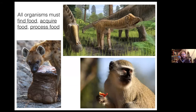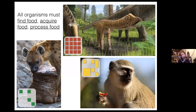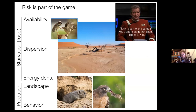Starting very simply: all organisms must find food, acquire food, and process food. They have to get the energy required for reproduction to pass on their genes to the next generation. Some organisms consume lower quality food that's more evenly distributed; some consume higher quality food that's more clumped in space; and others, such as the hyena, consume very energetically rich foods that are very clumped in space and also happen to move around. These are all unique challenges depending on the foraging strategy, and they all function to distribute risk.